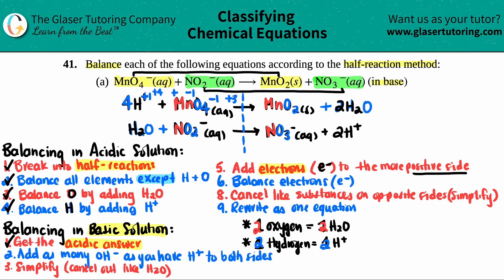On the right side, MnO2 has no charge (neutral, zero) and H2O is also neutral (zero), so the right side total charge is zero. The left side at +3 is more positive, so I add electrons there. The difference between +3 and zero is three, so I need to add three electrons to the left side of the top half reaction.